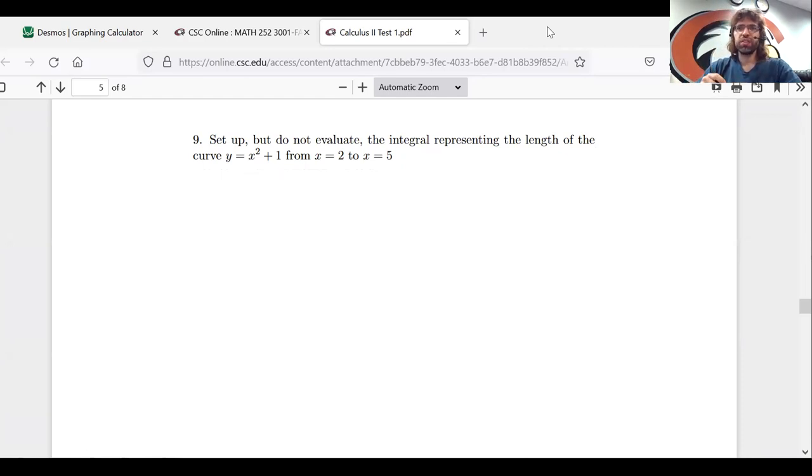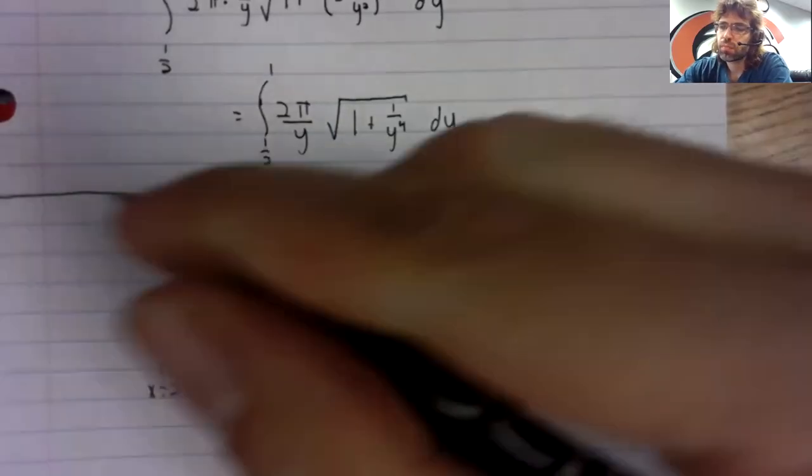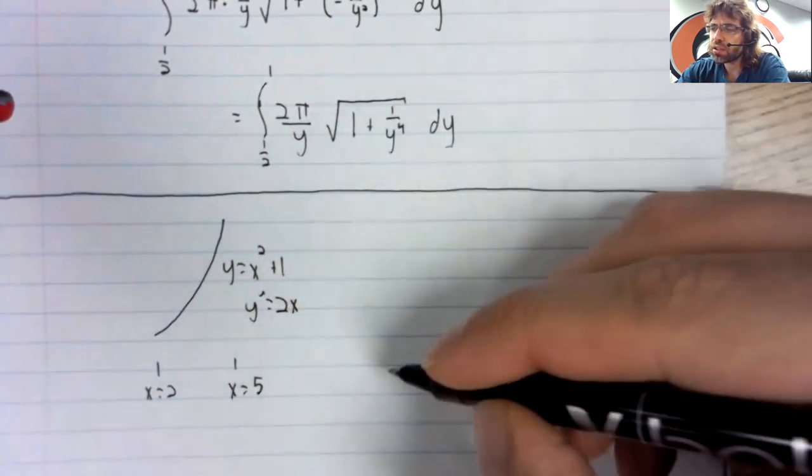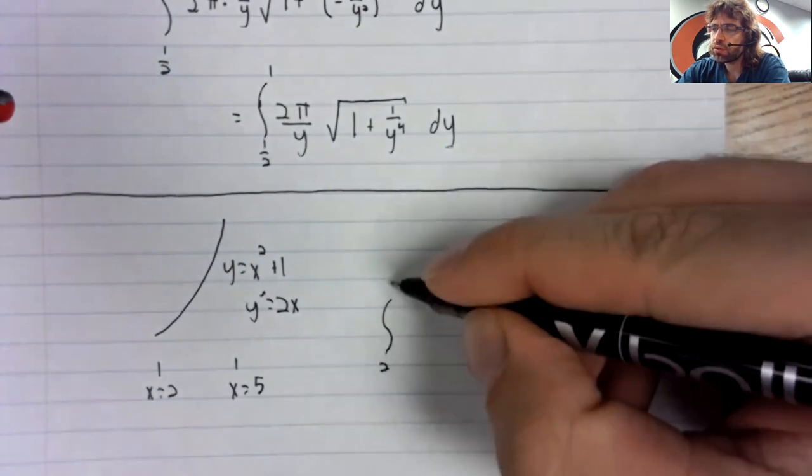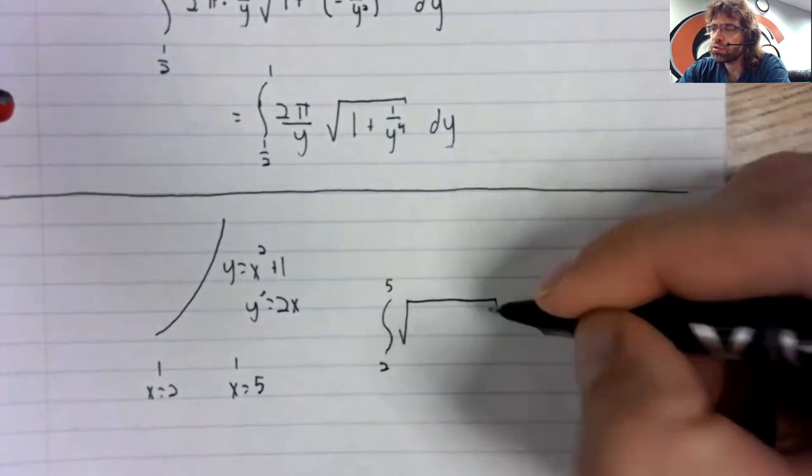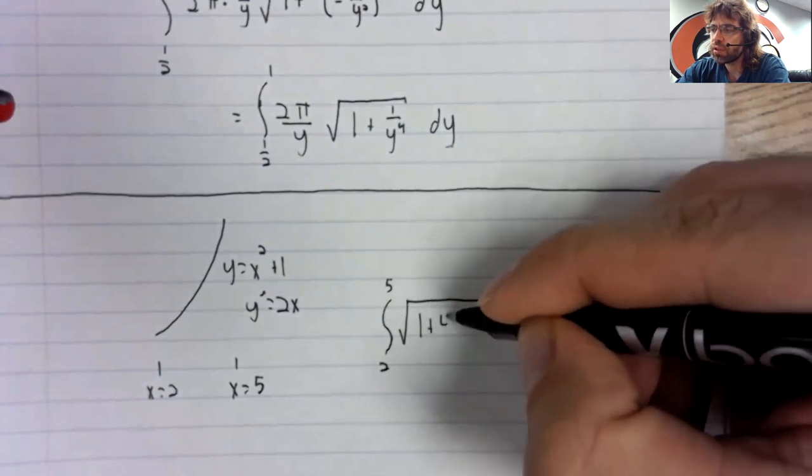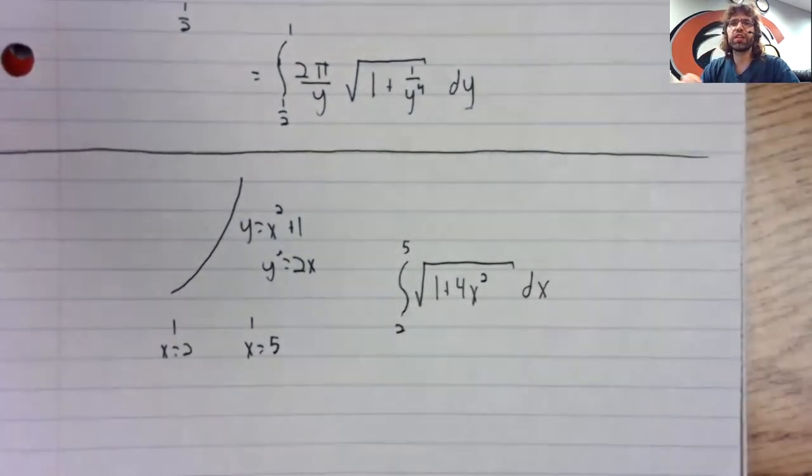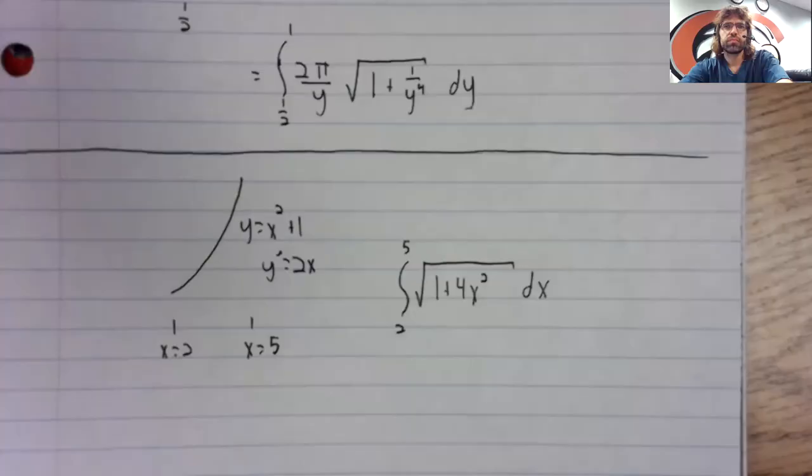So y equals x squared plus one from two to five. This is a very plug and play problem. There aren't really any complications. The derivative is two x. You've got the integral from two to five of the square root of one plus the derivative squared.